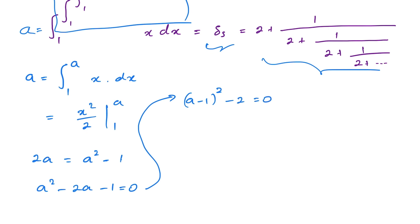Then we have (a - 1)² = 2, so a - 1 = ±√2. Therefore a = 1 ± √2.